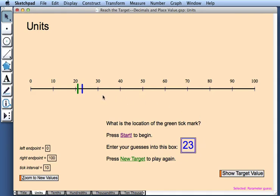Now 23 was too big. The green tick mark actually sits to the left of 23. But not a problem. I can make a second guess. So this time, I'm going to change my guess from 23 to 21. And again, I'll click outside the box.